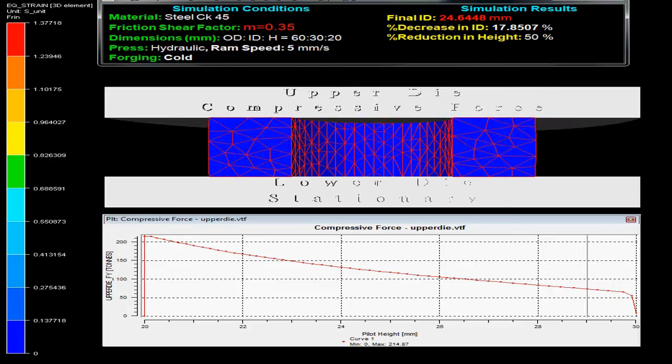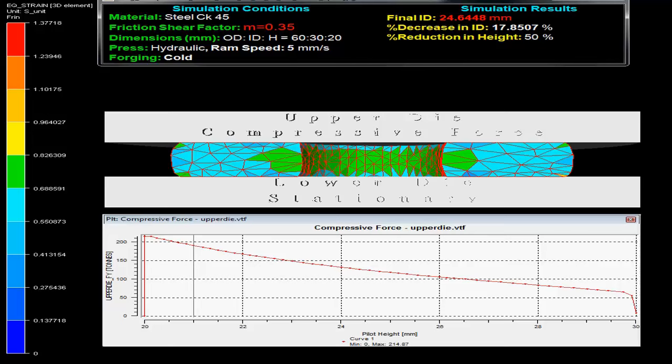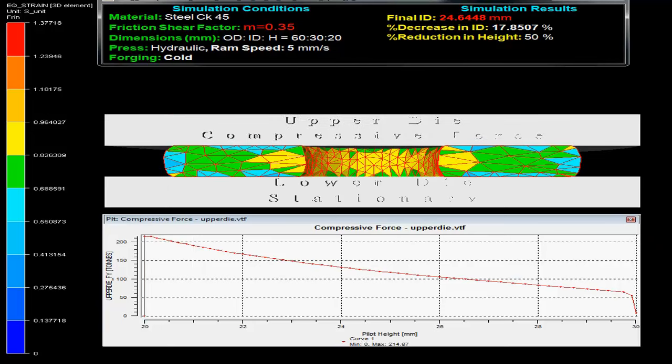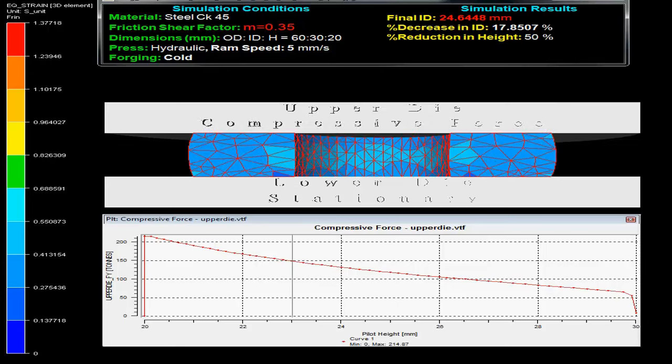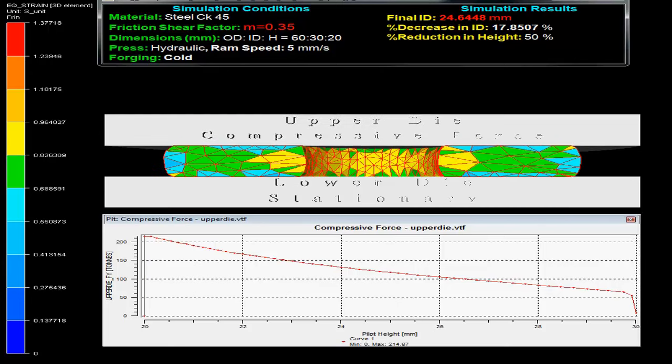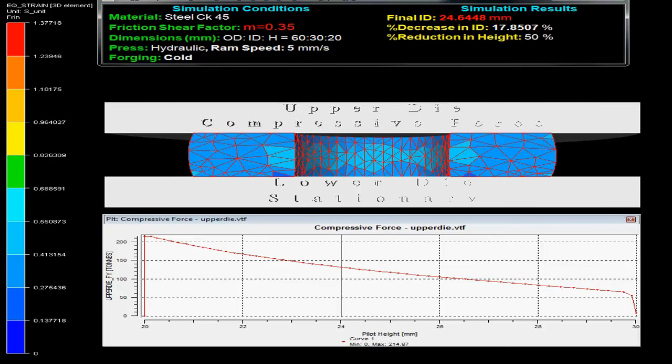The press uses hydraulic press with ram speed 5 mm per sec and forging is done cold. On the top right side simulation results show the final inner diameter as 24.7 mm with decreased inner diameter by 17.85% on 50% reduction in height.